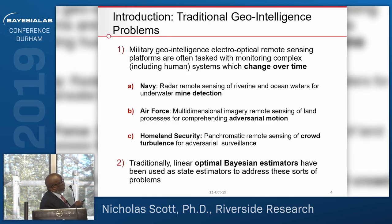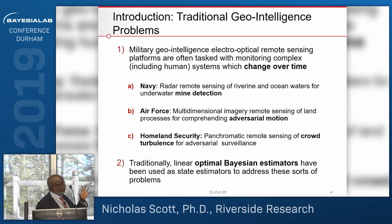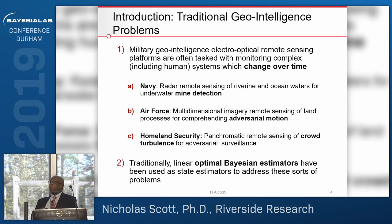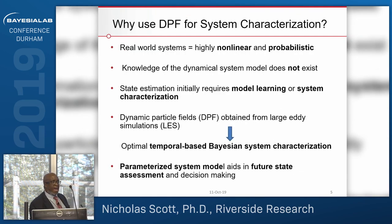Military geo-intelligence electro-optical remote sensing platforms are often tasked with monitoring complex human systems change over time. The military has satellites, ground observatory towers, and radar situated all over the world, continuously grabbing information. The Navy uses this data for mine detection, the Air Force for adversarial motion characterization, and homeland security for crowd turbulence assessment. Traditionally, linear optimal Bayesian estimates have been used as state estimators. However, real world systems are highly nonlinear and probabilistic, so traditional approaches don't always apply.